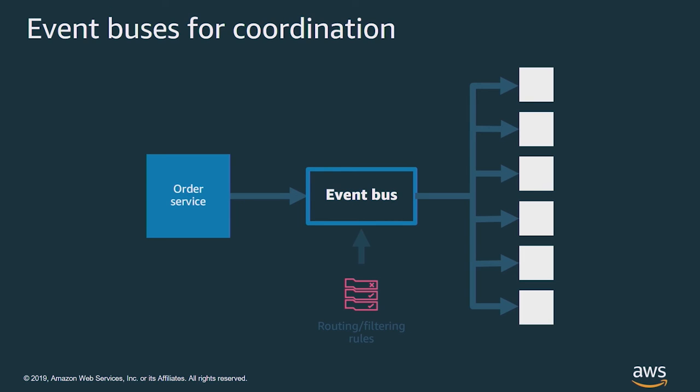So our architecture now looks like this. The order service sends events to the bus, which is configured with rules that determine which downstream systems get the event. Some targets will care about only certain events, while others will want to see all the events. Either way, the router now takes on the complexity of ensuring that these events get propagated appropriately to each downstream service.